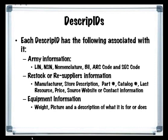In this database, each descript ID has additional information associated with it. It includes relevant Army information such as LIN, NSN, nomenclature, BII, ARC code, and SEC code. The restock and resupplier's information includes manufacturer, store description, part number, catalog number, the last resource, price, source website, or contact information. It also includes the equipment information such as the weight, a picture of the equipment, and a description of what it is for or what it does.